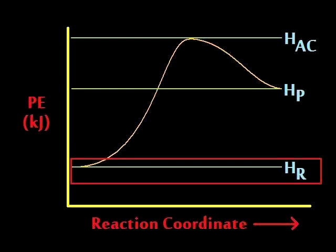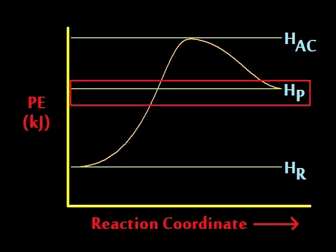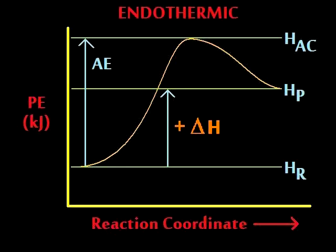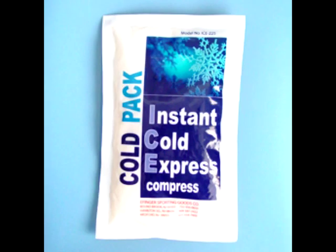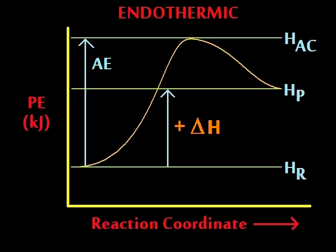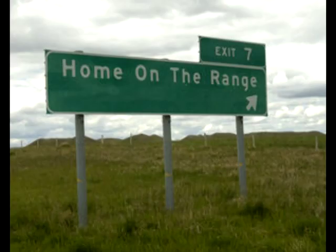If you start reactants low, products high — endothermic change, that means it's a chill. Endothermic — positive Delta H. Endothermic change, it's not strange. North Dakota has a town called Home on the Range.